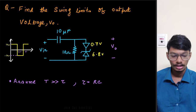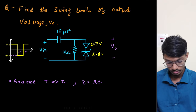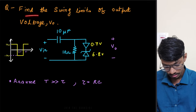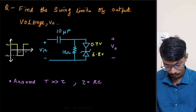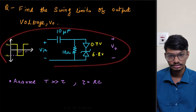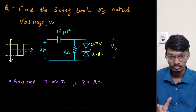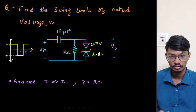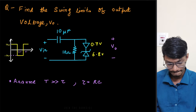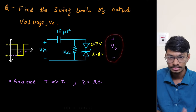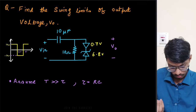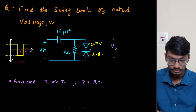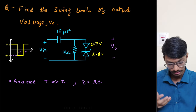Hello everyone, I'm Anish and today we're going to solve this question on voltage regulators. The question asks us to find the swing limits of the output voltage Vo. We have one diode with a cut-in voltage of 0.7 volts and one zener diode with a breakdown voltage of 6.8 volts. The condition given is that the time period T of the waveform is much much greater than the time constant RC of the circuit.